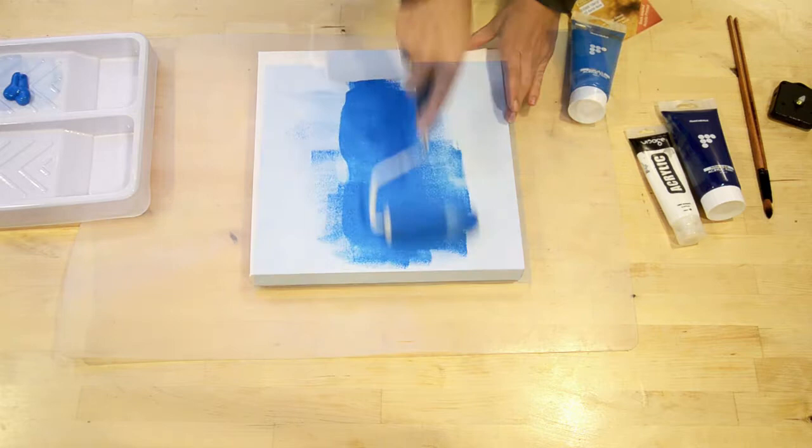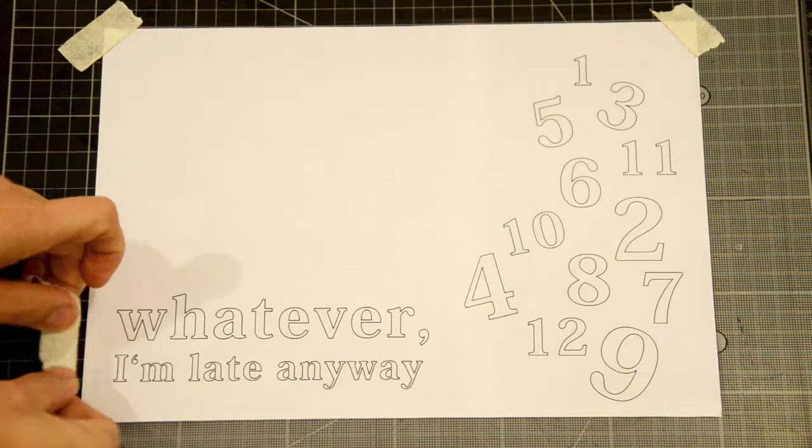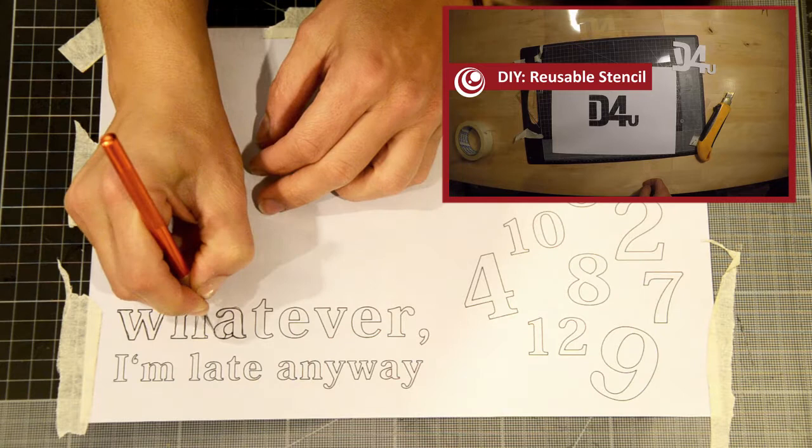Depending on your clock design, you might have to transfer letters or numbers onto your canvas. For my layout, I chose to make a stencil and use the screen printing method to transfer the letters and numbers.